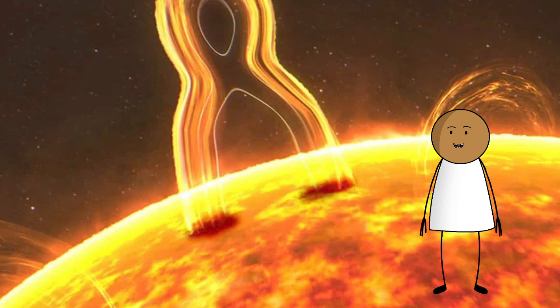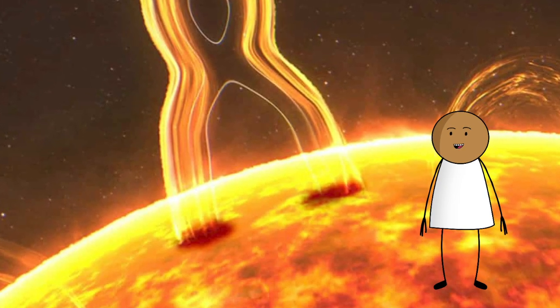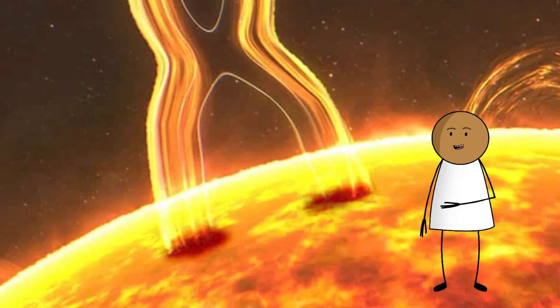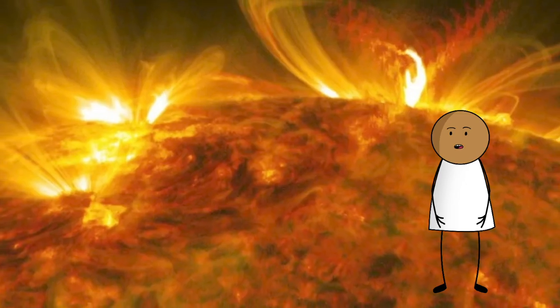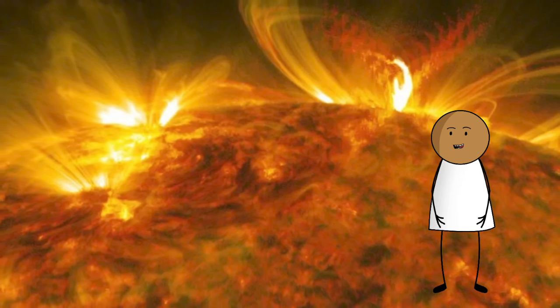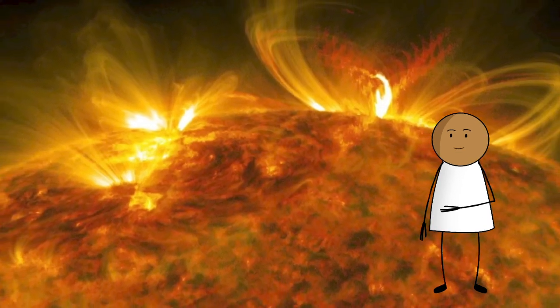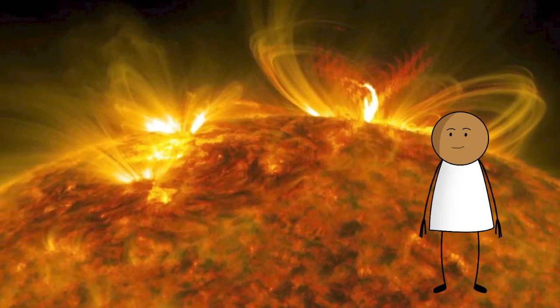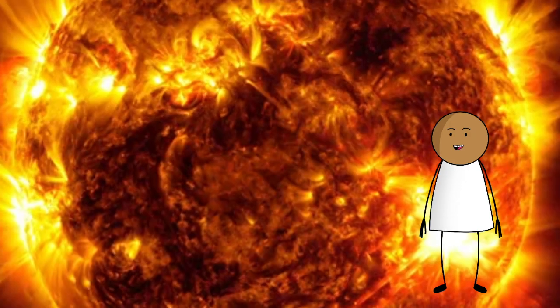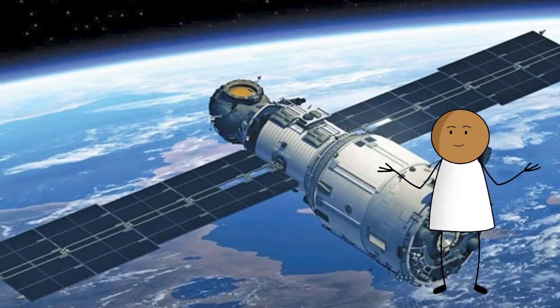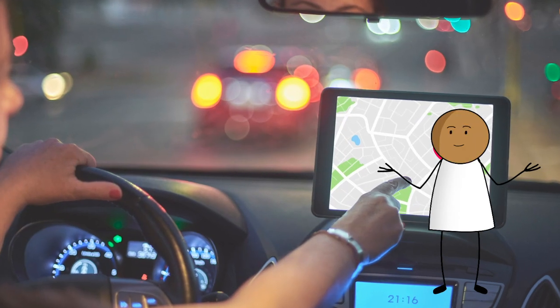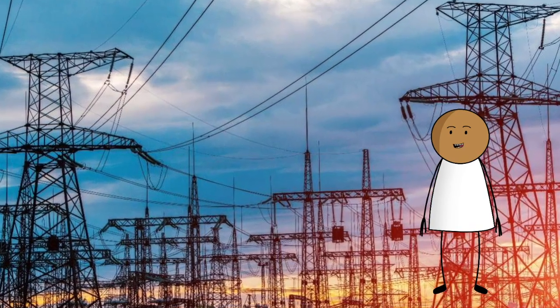It's caused by high energy particles and radiation belched out by our very own sun. Solar flares, for example, are massive explosions on the sun's surface that release tons of electromagnetic radiation. Then there are coronal mass ejections, which basically sound like the sun throwing tantrums by launching plasma clouds across the solar system. If one of those smacks Earth head-on, it can disrupt satellite signals, knock out GPS, mess with power grids, and even ground flights.